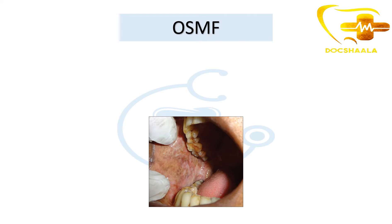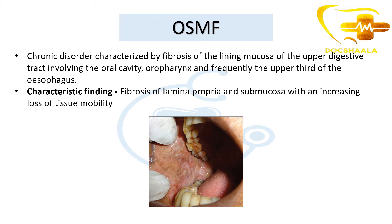OSMF — as you can see in this image — is a very important case that we see in our final years. It is a chronic disorder characterized by fibrosis of the lining mucosa of the upper digestive tract, involving the oral cavity, oropharynx, and frequently the upper third of the esophagus. So OSMF involves from the oral cavity to the upper third of the esophagus.